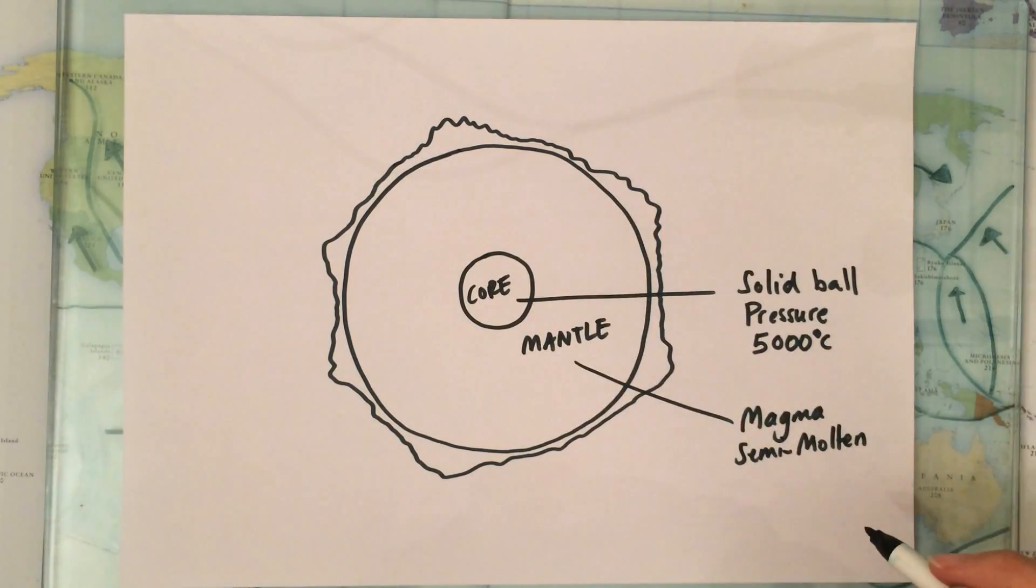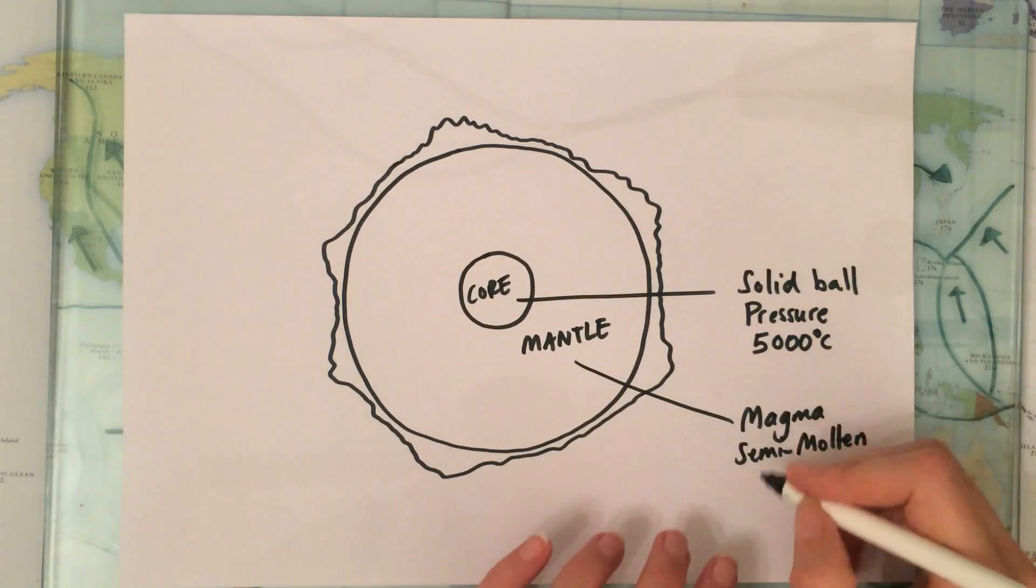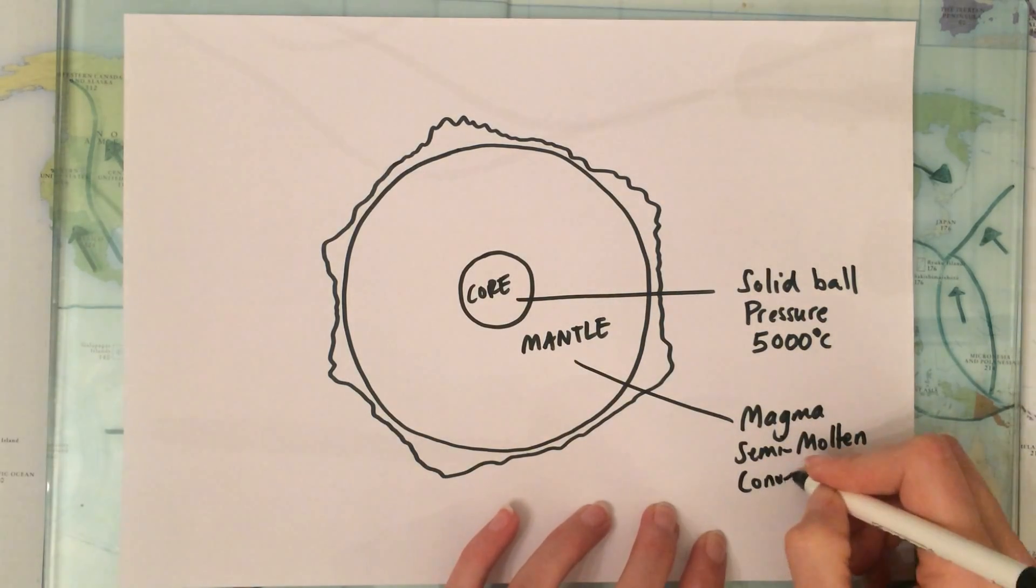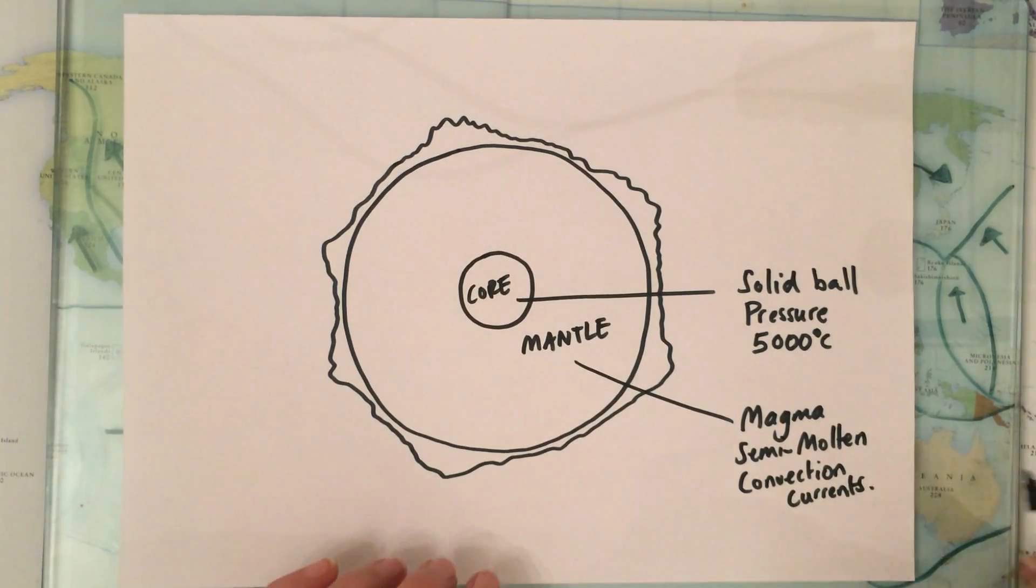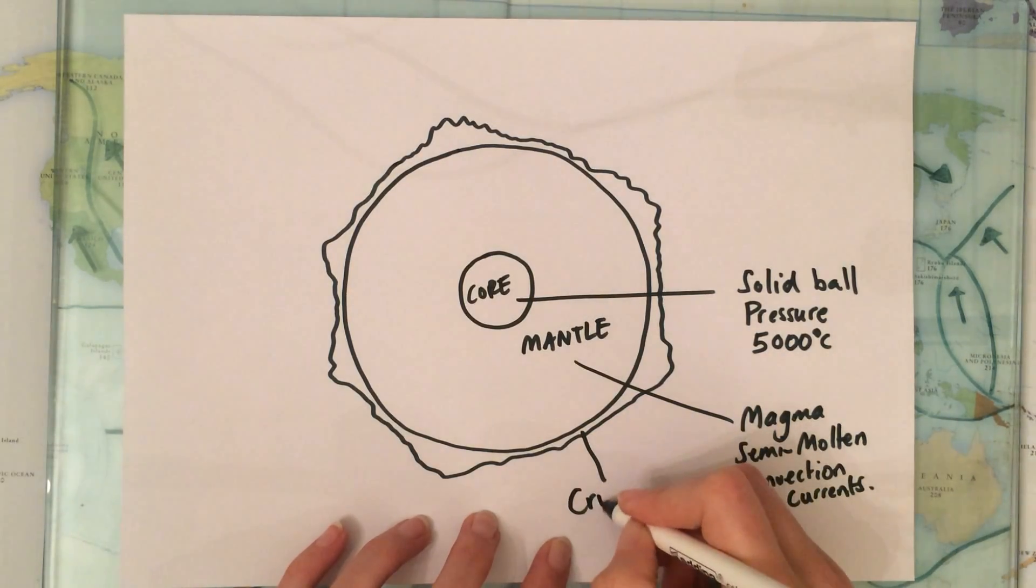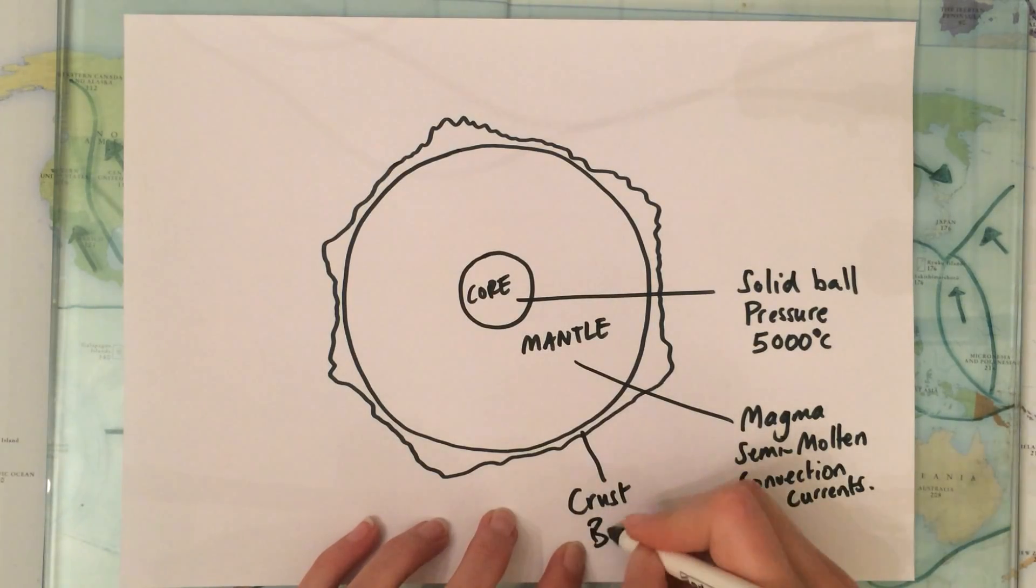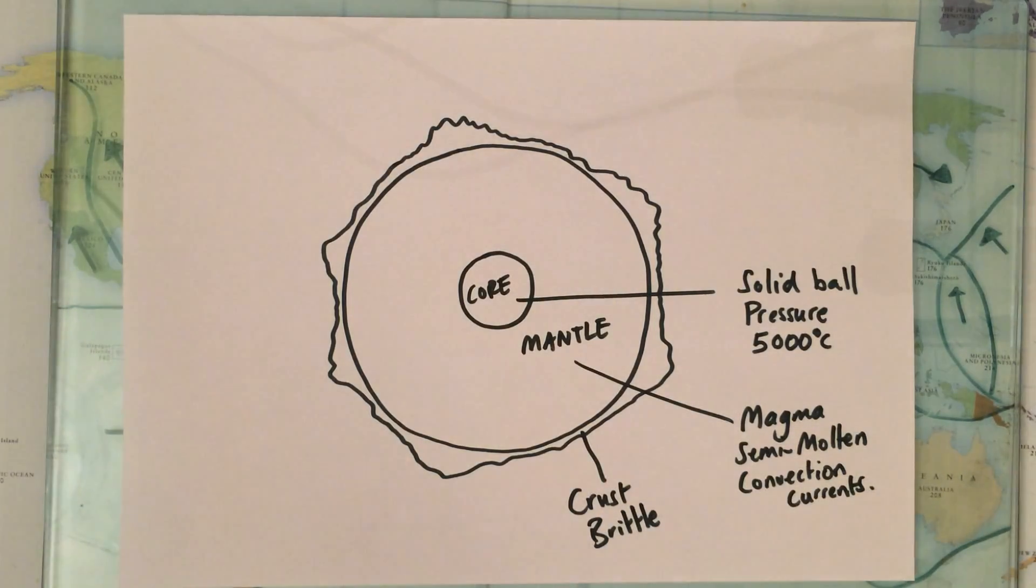It's the thickest layer and in this mantle we have something called convection currents which I will talk about in a little bit more detail in a moment. And then finally we get to the outer layer which is the thinnest layer known as the crust and the crust is very brittle just like the eggshell.